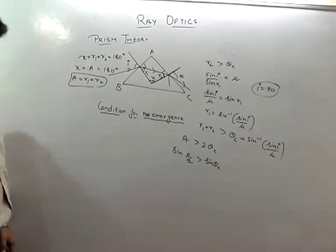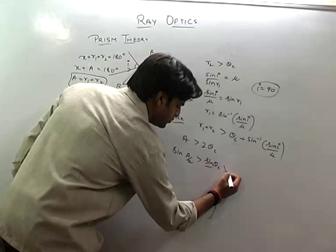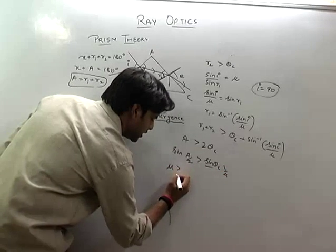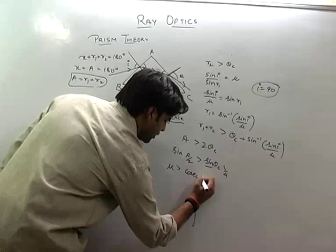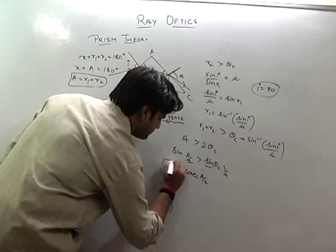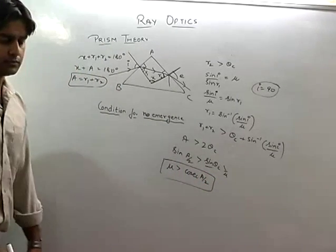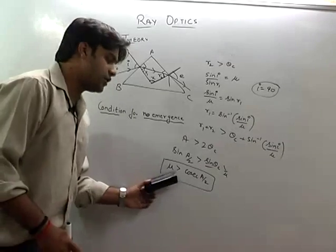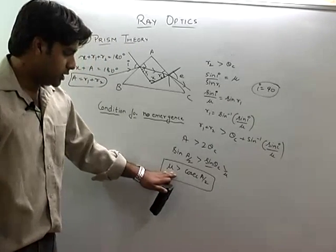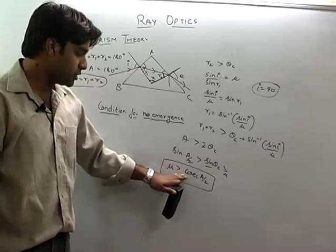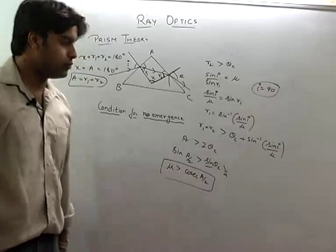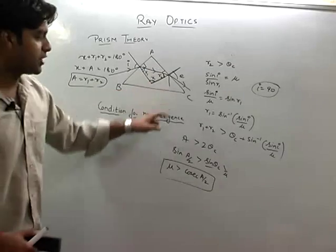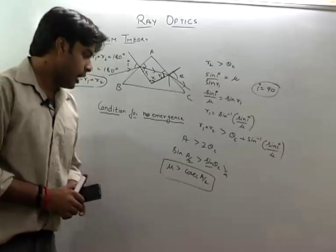Because of theta c, one upon mu, that means mu is greater than cosec of a by 2. That means when we have the condition for total internal reflection, if mu is greater than cosec of a by 2, we get the total internal reflection.